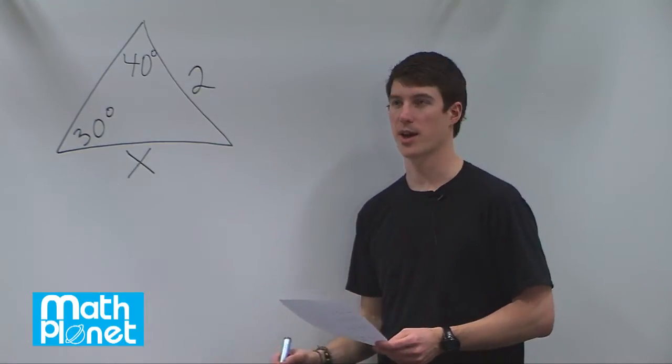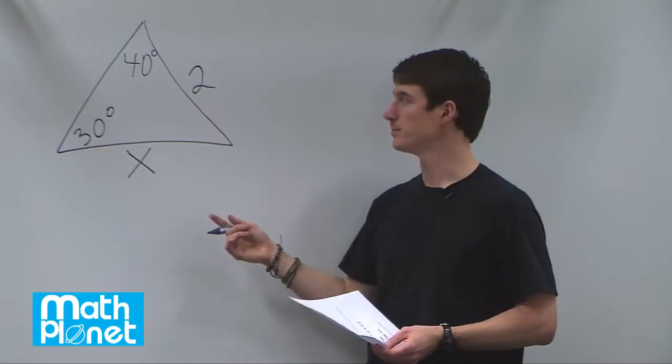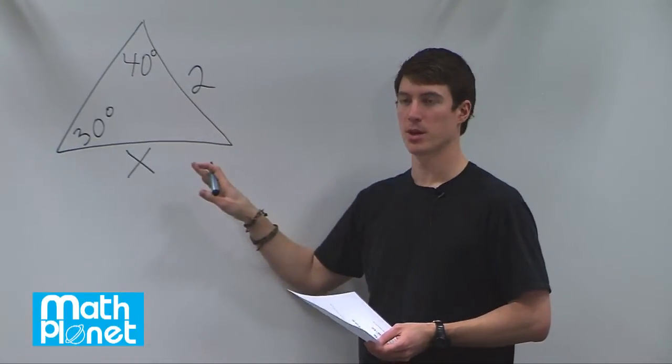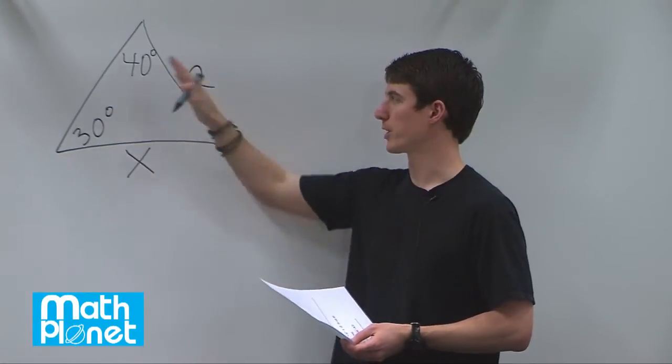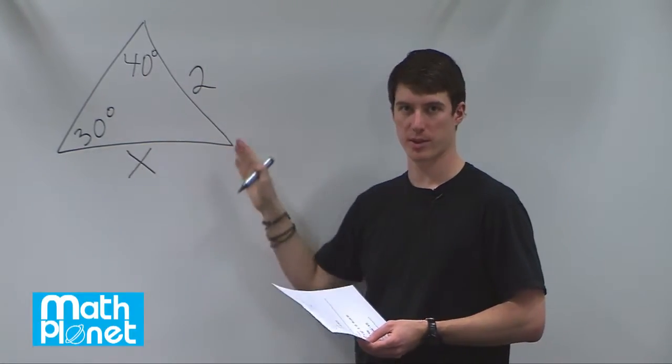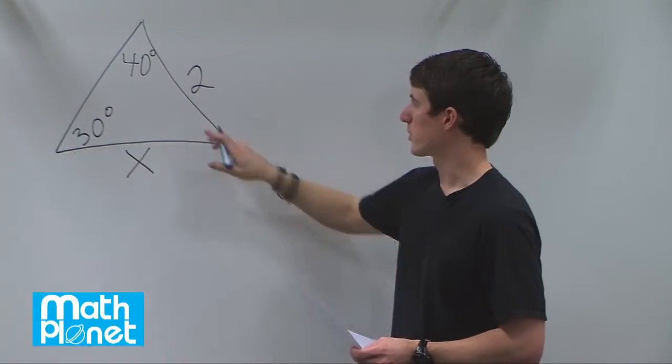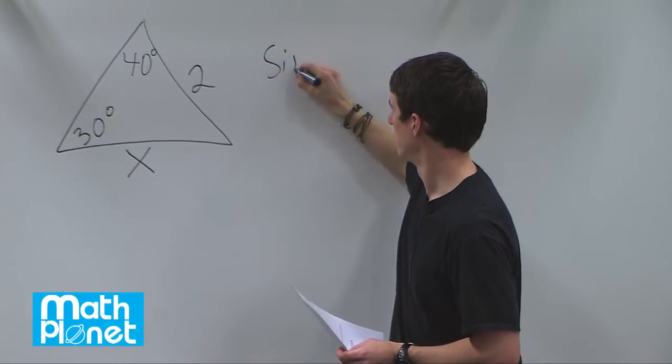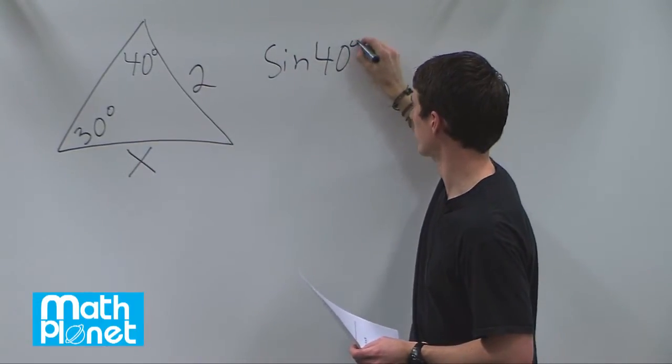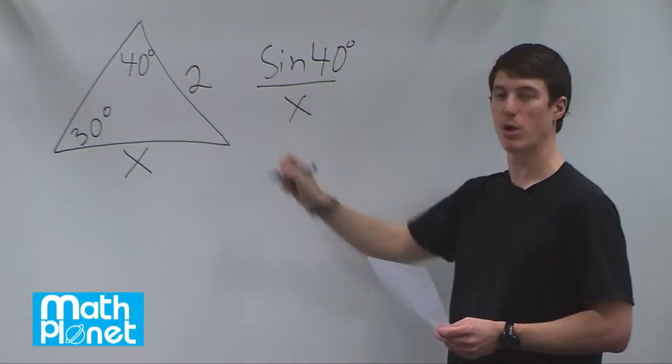To do that, we're going to use the law of sines. What that says is the sine of some angle in any triangle divided by the opposite side's length is equal for each set of those opposite length angles for each of the three sides here. In other words, sine of 40 degrees over x is equal to sine of 30 over 2.